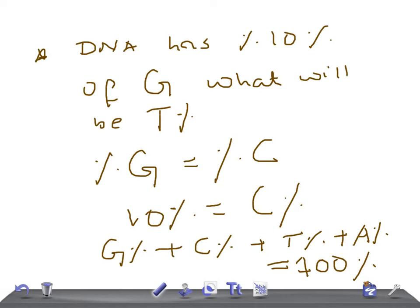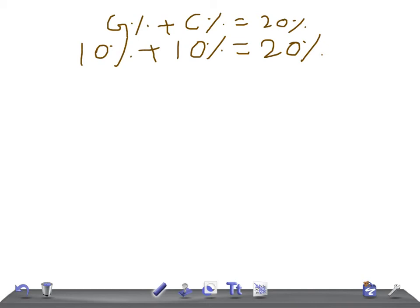So now, let's talk about this. 10% plus 10%, that is G plus C, equals 20%. So, G percentage plus C percentage equals 20%.